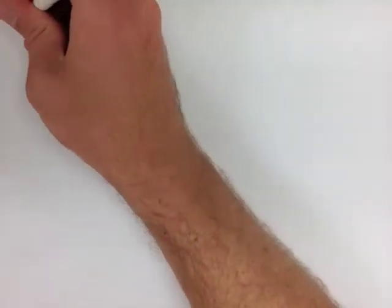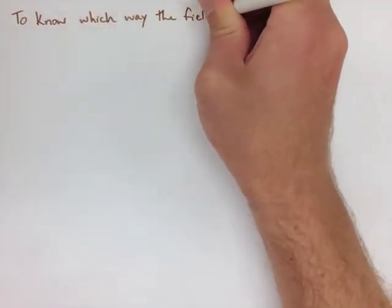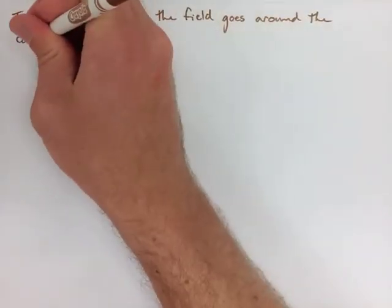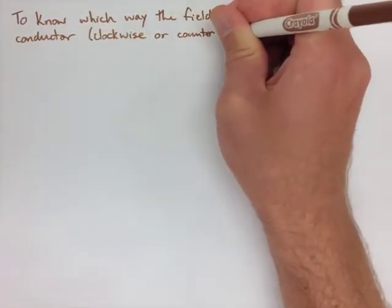To make it easier to remember, there was a rule developed to figure out which way the field goes around the conductor. So it's either going to be clockwise or counterclockwise, and we just need to know that we're pointing our thumb in the direction of the dot that's in that wire.